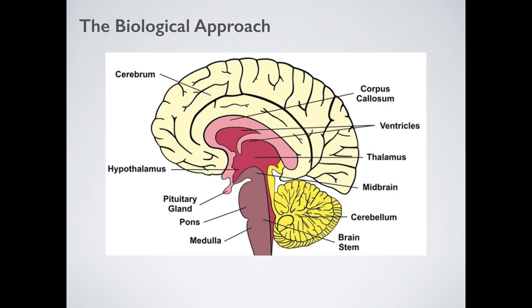The biological approach believes all human behaviour to be a consequence of genetics and biology and physiology, and nothing else. This is the only real approach in psychology that examines your behaviours, your thoughts, your feelings from a purely biological — you might even say physical — point of view. All that is psychological is at first biological. All your behaviours, all your thoughts, all your feelings ultimately have a biological cause.